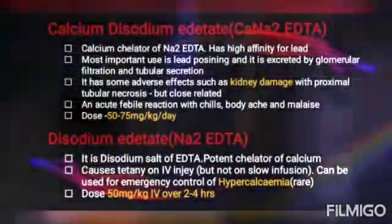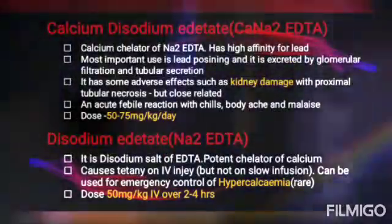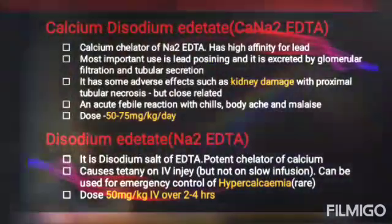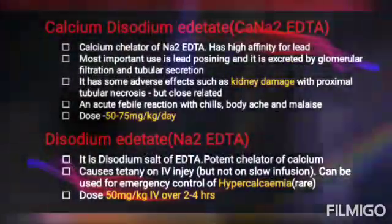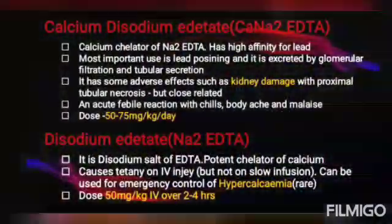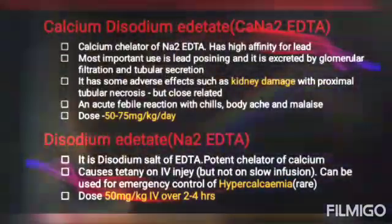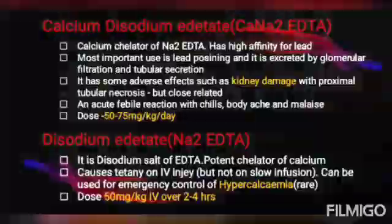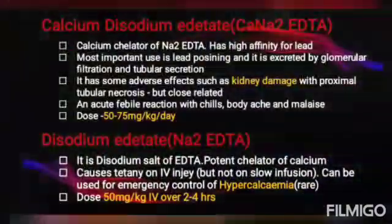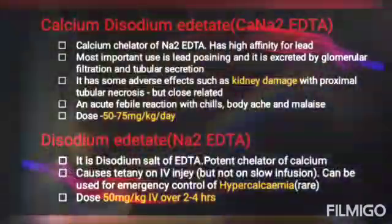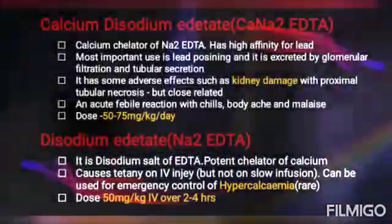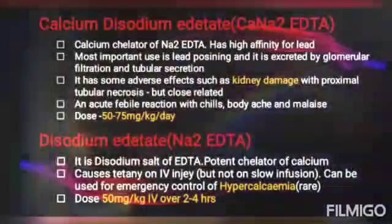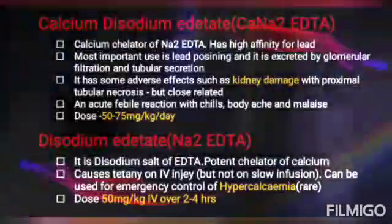The next drug is calcium disodium ethylenediamine tetraacetic acid (CaNa2EDTA). It is a calcium chelate of disodium ethylenediamine tetraacetic acid. It has high affinity for lead. Its most important use is lead poisoning, and it is excreted by glomerular filtration and tubular secretion. Adverse effects include kidney damage with proximal tubular necrosis and acute febrile reaction with chills, body ache, and malaise. The dosage is 50-75 mg/kg per day.